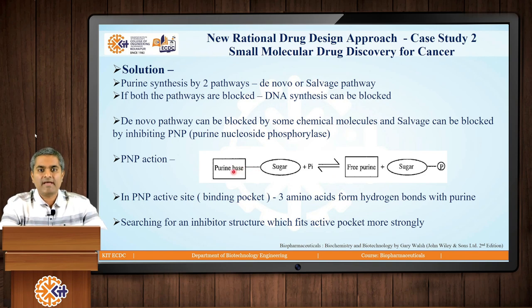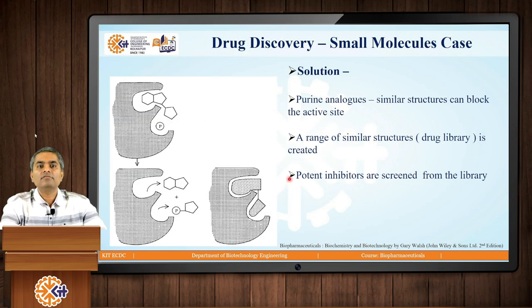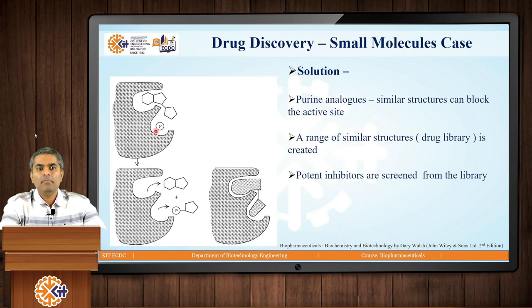To block the PNP reaction, we can block the enzyme active site because in the enzyme active site or binding pocket, this reaction happens which produces free purine. To block the enzyme active site, if we have some blocker agent or inhibitor binding at the active site, then we can achieve active site inhibition so the real substrate of the enzyme will not bind there. The solution is structural feature characteristic identification — as shown in this diagram, the active site of the PNP enzyme can be blocked to make the reaction stop.